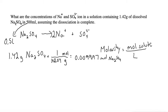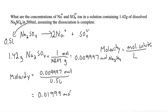So let's take that number of moles and divide it by our liters to get molarity. So our molarity of Na2SO4 is the 0.009997 moles divided by the 0.5 liters, which is 0.01999 mol per liter of Na2SO4.